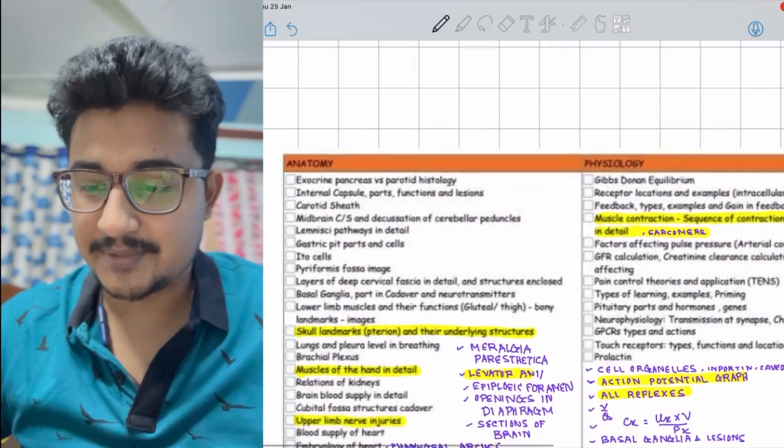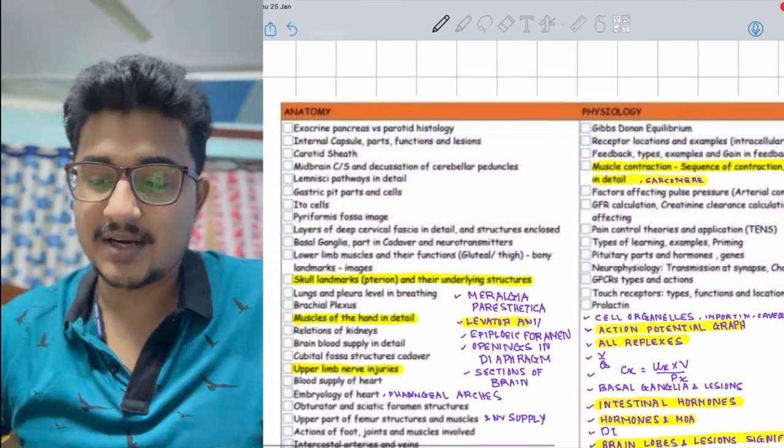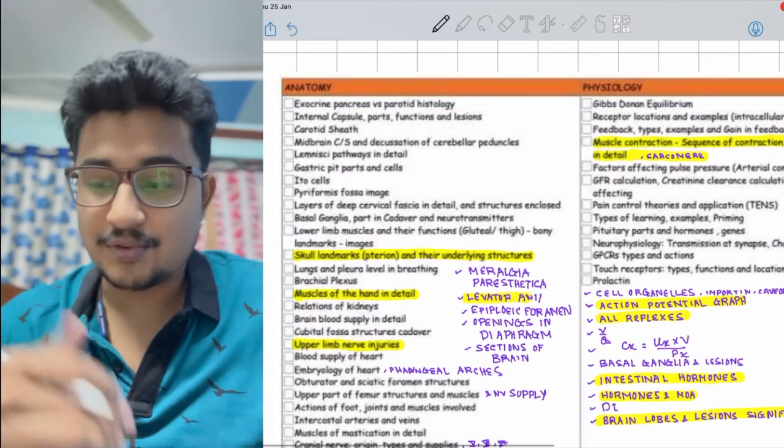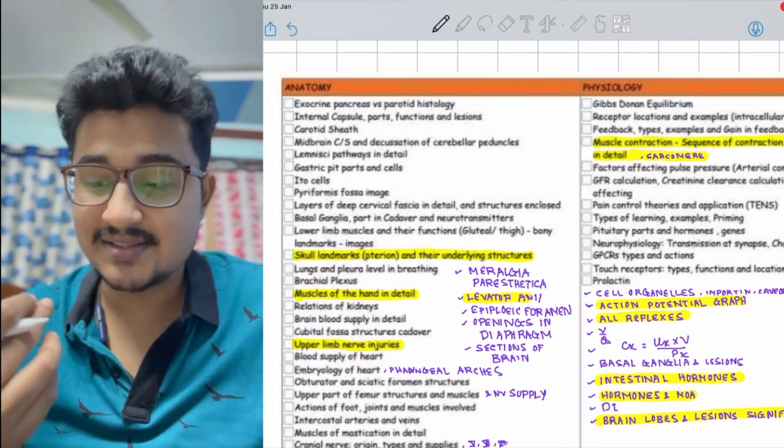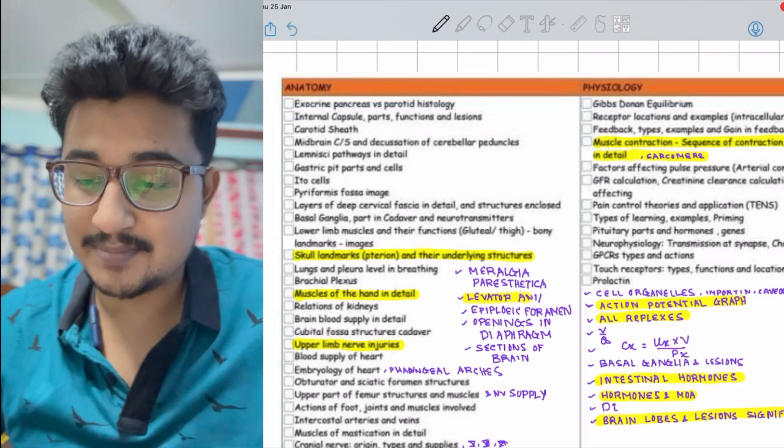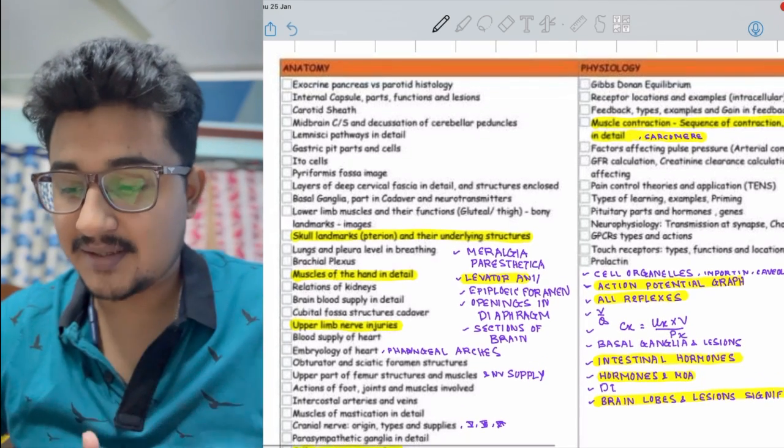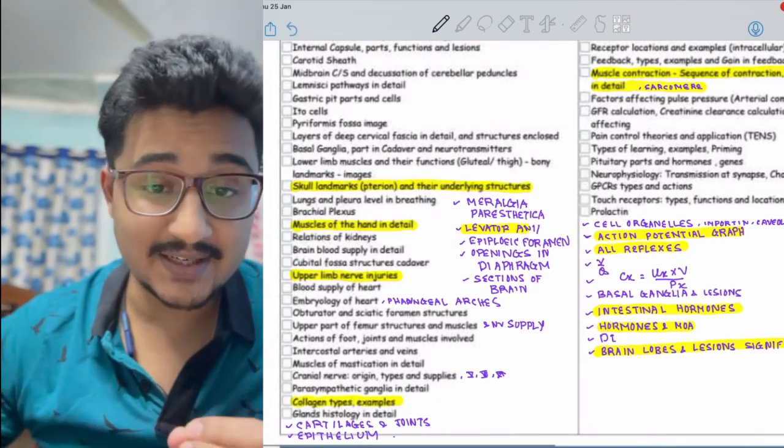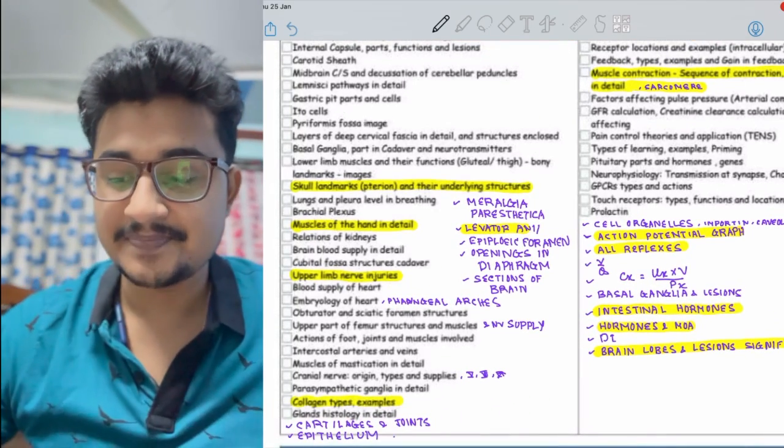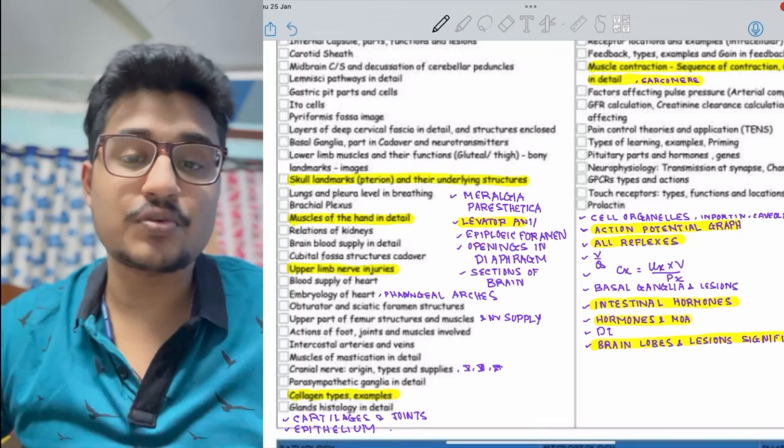Now coming to basic subjects like anatomy. Neuroanatomy is asked more - skull markings, pterion, structures underlying the pterion is important. Intrinsic muscles of the hand, upper limb nerve injuries are important nowadays. Levator ani muscle is also being asked, types of collagen, and histopathology - you should have a bit of knowledge.